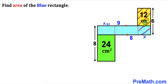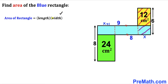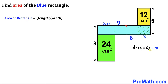Let's focus on this big shaded rectangle whose side lengths are 6 and x. Recalling the area of a rectangle formula — area equals length times width — the area of this shaded rectangle is 6x. Since the area of the yellow rectangle is 12, the area of this blue shaded part is 6x − 12. Factoring out 6 gives us 6(x − 2), so the area of this small rectangle is 6(x − 2).